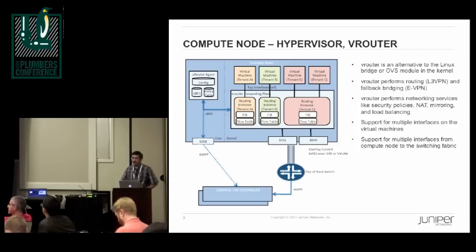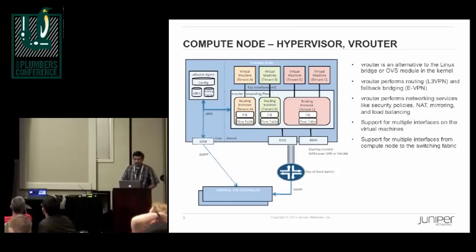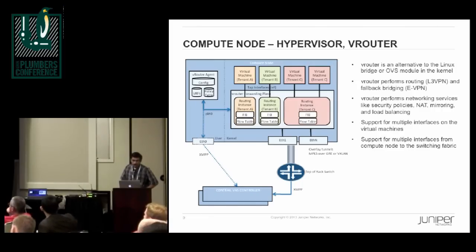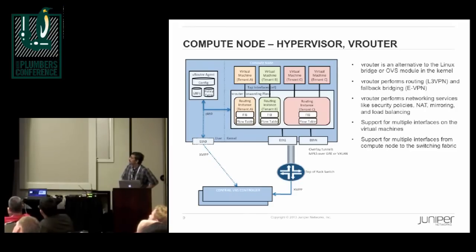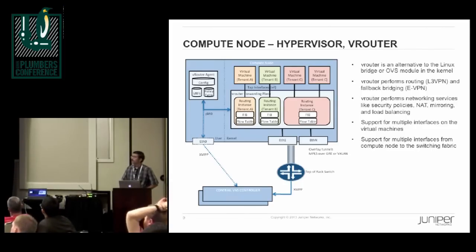We support CentOS, Ubuntu, Fedora, and also Xen. On the compute node, we have a kernel module — the vRouter module — which talks to a user-space agent. The virtual machines have their tap interfaces, which the vRouter module knows about. Inside the module, we have the notion of separate VRFs for each tenant, borrowing from L3 VPN concepts. Each VRF has its own forwarding table, and we also support flows to implement forwarding policies.